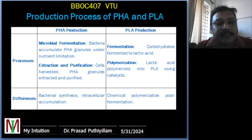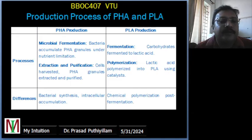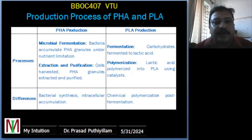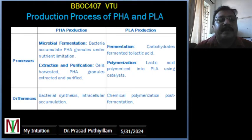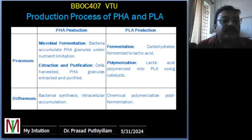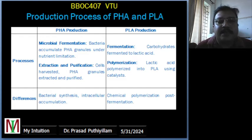In the second step — extraction and purification — once the bacteria have accumulated enough PHA granules, they are harvested and lysed to release the PHA granules. These granules are then purified, often using solvent extraction, and the PHA is separated from bacterial cell debris and other impurities. This purification process ensures that PHA is suitable for use in various applications.